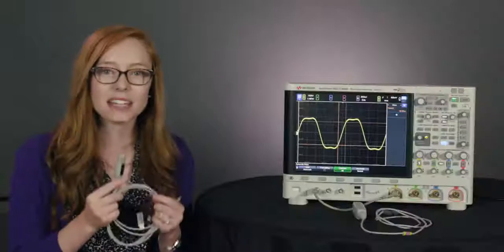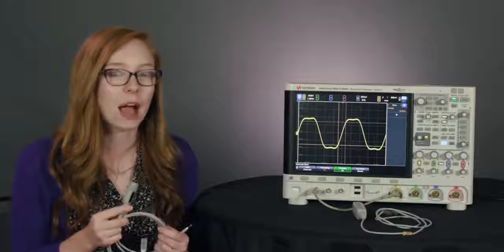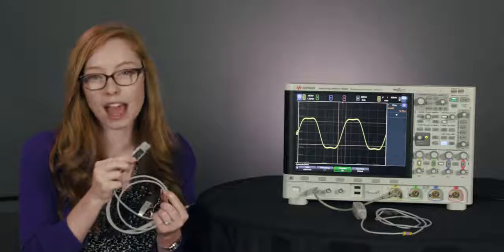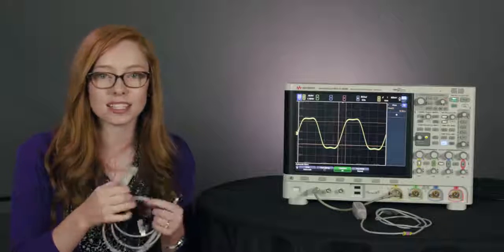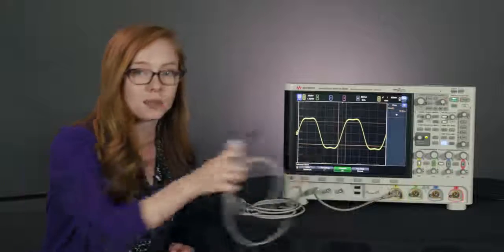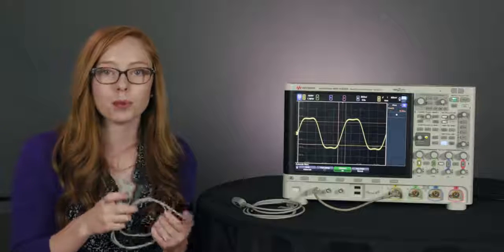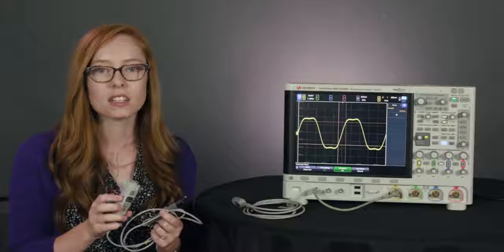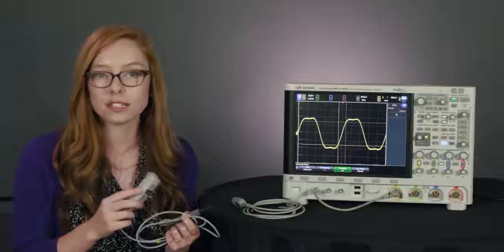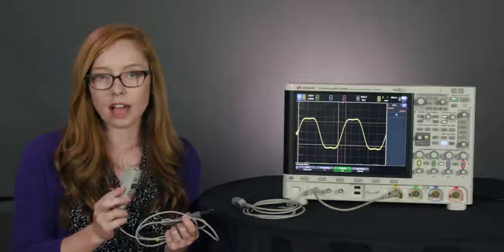The internal design of these two types of probes is quite different and it really comes down to one thing: power. Passive probes do not require any power. Inside of the probe head you'll find resistors and capacitors. But with an active probe it does require power. There's active components inside of the probe head. So you'll find transistors instead of resistors, and you'll also typically find an amplifier.